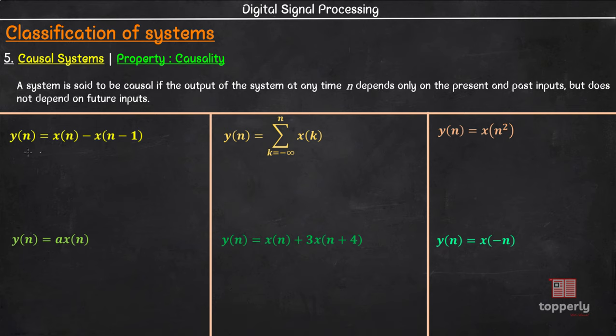Coming to this system, the output y of n here only depends on the present input x of n and past input x of n minus 1. As you can see, no future inputs are present in the output equation, so this is a causal system.